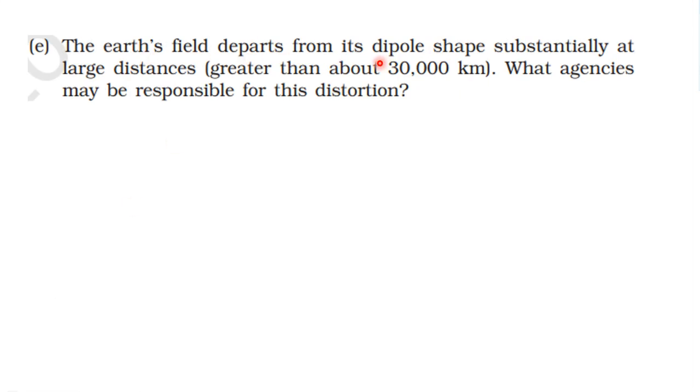The field departs from its dipole shape substantially at large distances greater than 30,000 kilometers. What agencies may be responsible for this distortion? At long distances from Earth, in the ionosphere, the ions distort the dipole moment. The solar wind, with its ions, affects the dipole moment direction, causing the field to depart from its dipole shape.